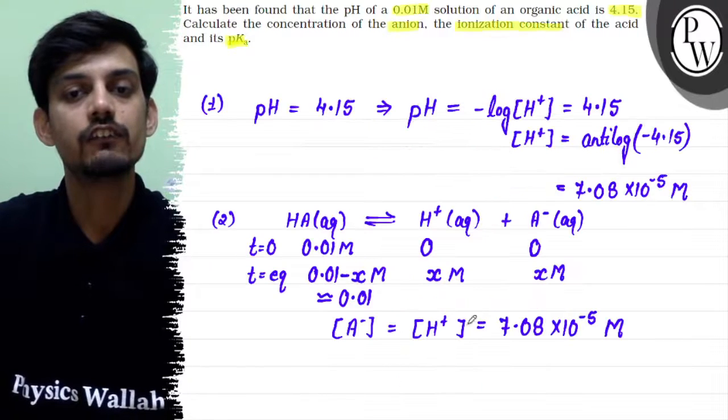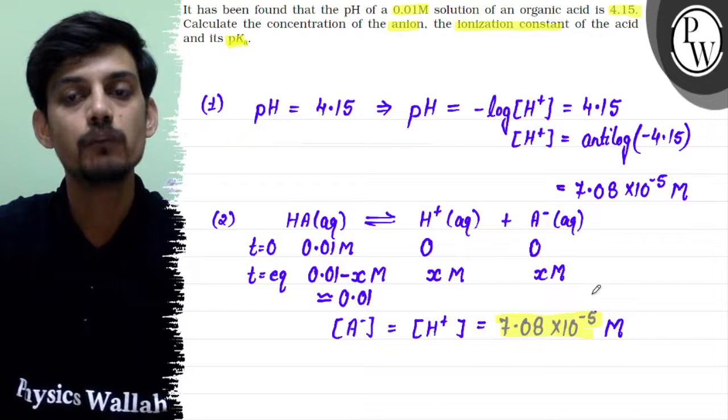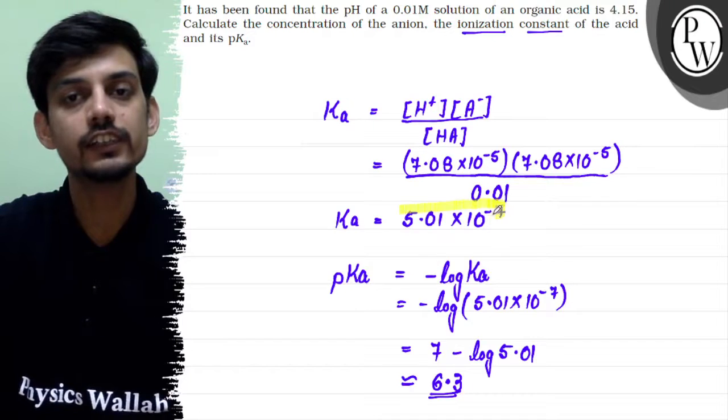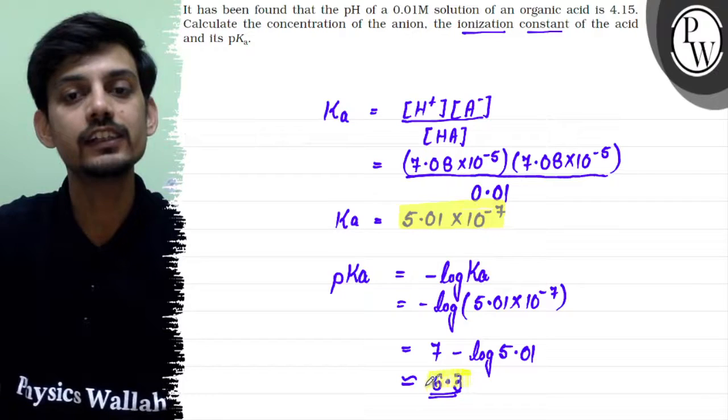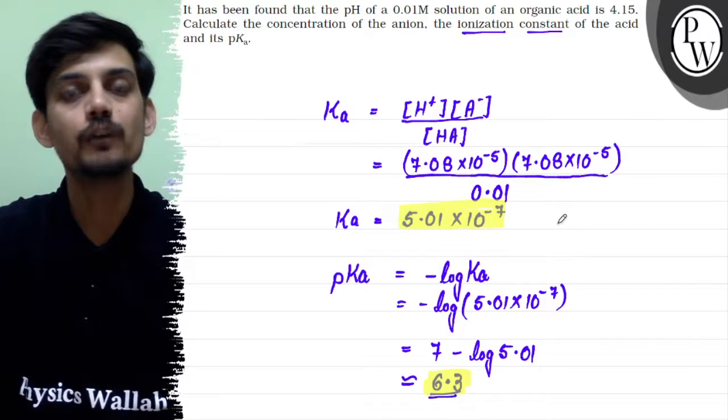Now we can see for the first part, the concentration of anion is 7.08 times 10 to the power minus 5 moles per liter. The value of ionization constant is 5.01 times 10 to the power minus 7, and the value of pKa of the acid is 6.3. These are the answers for the given question. Hope this clears the question. Best of luck. Thank you.